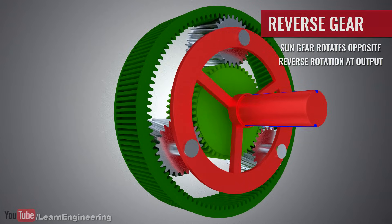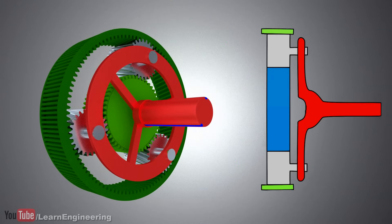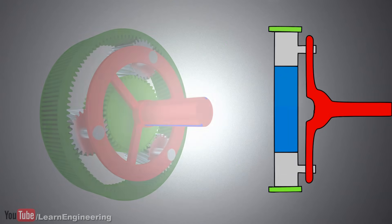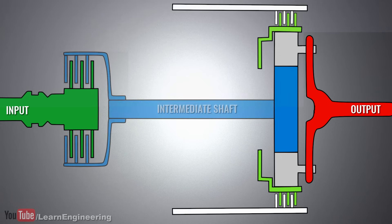This 3D planetary set is represented in 2D as shown. In an automatic transmission, the input and the output are not directly connected. They are connected through an intermediate shaft as shown.